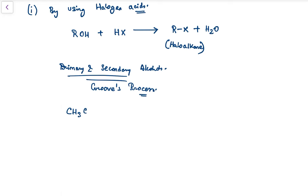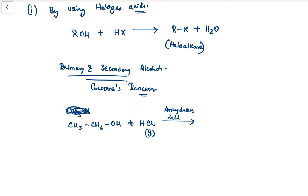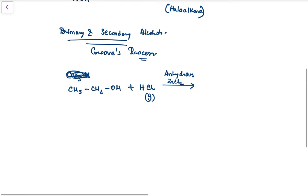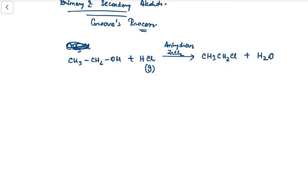The reaction is as follows: CH₃CH₂OH, an alcohol, is taken. Then a halogen acid in the gaseous state is made to react in the presence of anhydrous ZnCl₂ (anhydrous means in the absence of water). The reaction product is CH₃CH₂Cl plus H₂O. We can do the same thing in the case of secondary alcohols too.